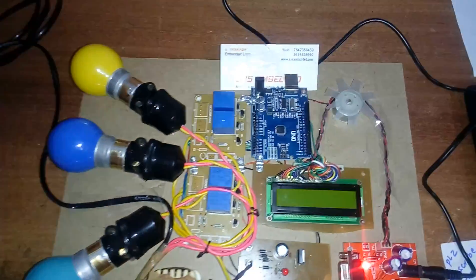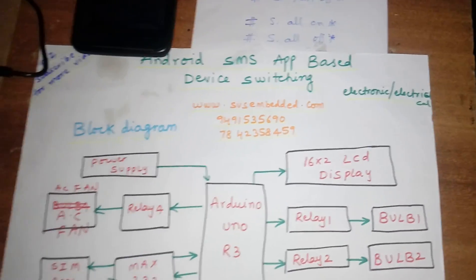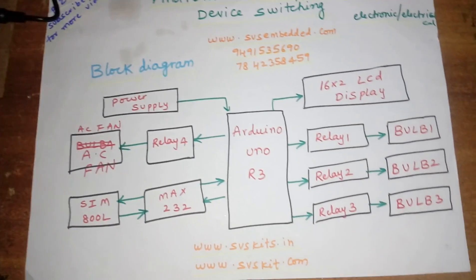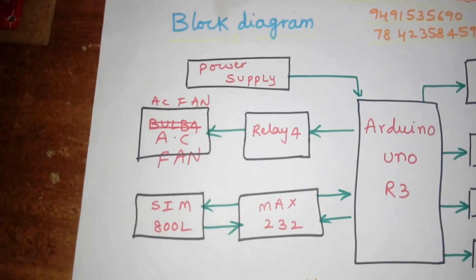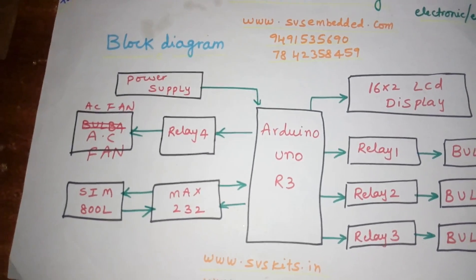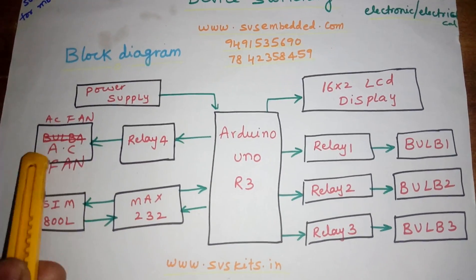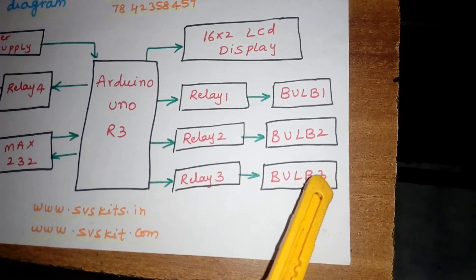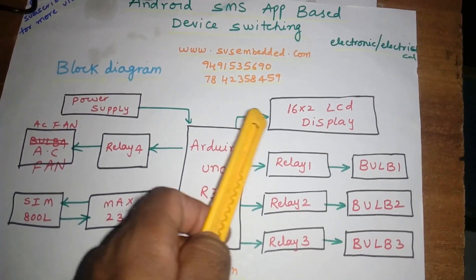Hi, we are from SVS Embedded. The project title is Android SMS App Based Device Switching Electrical and Electronic Appliances System. Here I'm using an Arduino Uno R3, one 16x2 LCD display, one DC fan, one SIM800 GSM module, connected with relay 1, relay 2, relay 3, and relay 4. Relay 1 is connected with the DC fan, and bulb 1, bulb 2, bulb 3 are the AC electrical appliances. The 16x2 LCD display shows whatever process is going on.